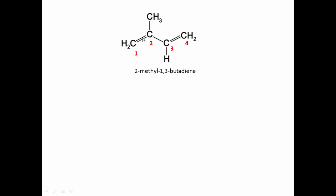We can look at the structure and define our parent chain — the main chain which forms the backbone of the structure. Sometimes we don't have double bonds to make it obvious, so you could look at the path with the longest chain. One path going this way has three carbons, and another path has four carbons. When looking at chain lengths, the one with the longest chain would be the main chain or parent chain.